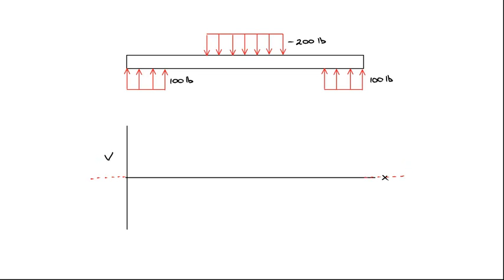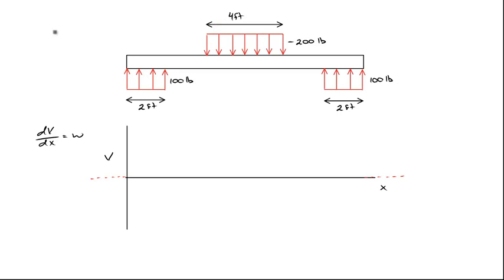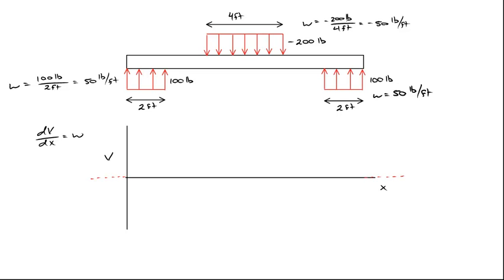So as we generate this plot, it has to be zero for negative values of x, and zero for x larger than the length of the beam. Additionally, the slope of the curve, dv/dx, is equal to w, the distributed load, in all cases. To calculate w we need to know the width over which the forces are distributed. In the center, w equals negative 200 pounds divided by 4 feet, which is negative 50 pounds per foot. On the left side, w equals 100 pounds over 2 feet, which is positive 50 pounds per foot. In the regions where no forces are applied, w equals zero.